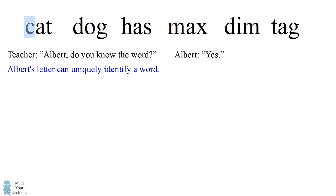For example, consider if Albert had gotten the letter C. The letter C only appears in the word cat. So if Albert had gotten the letter C, he would be able to figure out that the word is cat.